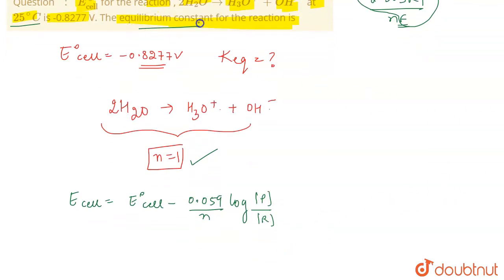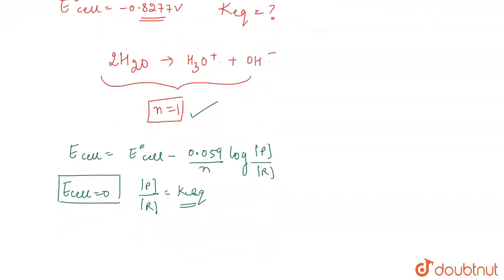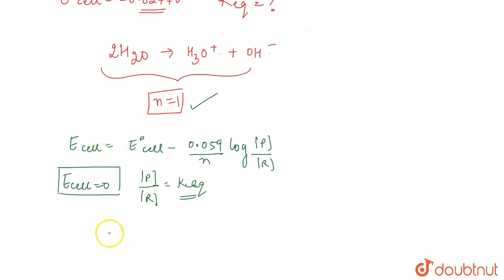Ecell becomes equal to zero. When the reaction is in equilibrium, Ecell becomes equal to zero, and this concentration of products divided by reactants becomes equal to the equilibrium constant. This is the condition when the reaction is in equilibrium. So this becomes zero, which means E°cell equals 0.059 divided by n times log of equilibrium constant.